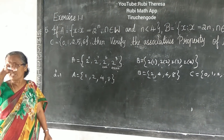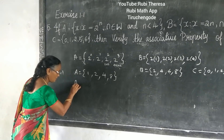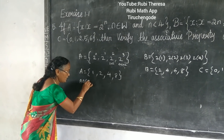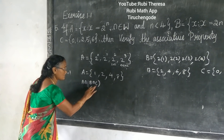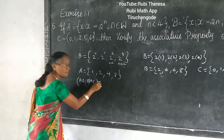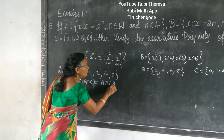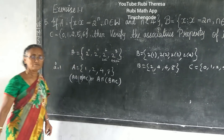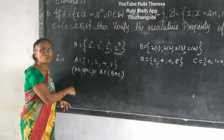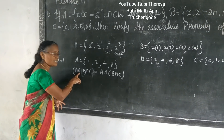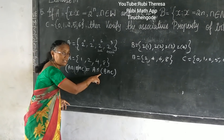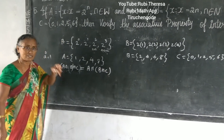Will you be able to state the associative property of intersection? The property states: A intersection (B intersection C) equals (A intersection B) intersection C. You can write it either way — both are acceptable. So first we find the left-hand side: A intersection (B intersection C).